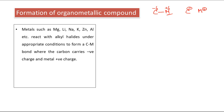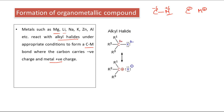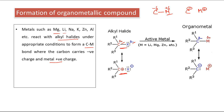Metals such as Mg, Li, Na, K, Zn, Al, etc. react with alkyl halides. Under appropriate conditions, a carbon-metal bond is formed where carbon carries negative charge and metal carries positive charge. In the alkyl halide starting material, halogen is more electronegative, so partial positive charge is on carbon. Once the organometallic compound is formed, there is polarity reversal — carbon now carries negative charge and metal carries partial positive charge.